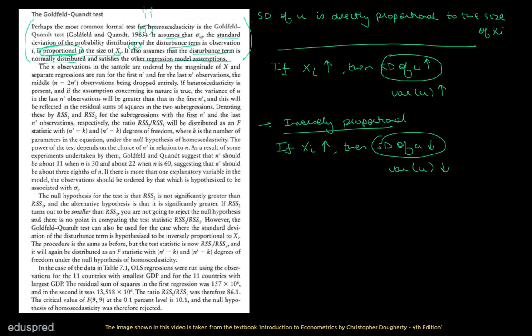This paragraph gives you the answer to part two — you can write these assumptions there. Now let's understand the procedure to run this test. The second paragraph states that the n observations in the sample are ordered by the magnitude of X. For the sake of example, I'm going to assume that n is equal to 7.